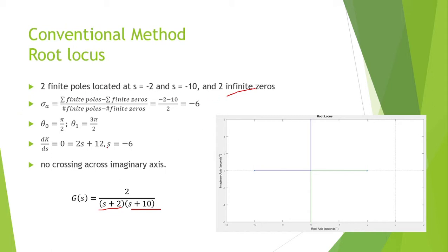The asymptote intercepts at negative 6 on the real axis, and the angles are 90 degrees and 270 degrees. The breakaway point is located at negative 6 on the real axis, and there's no crossing point for the imaginary axis.